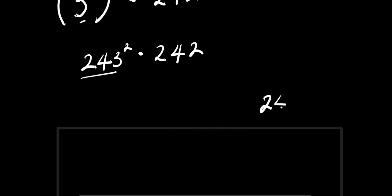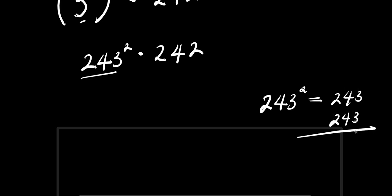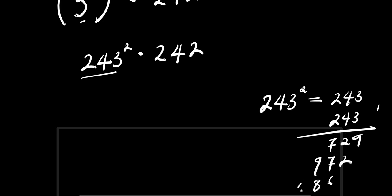So 243 to the power of 2 equals 243 times 243. Working through the multiplication: 3 times 3 is 9; 3 times 4 is 12, carry 1; 3 times 2 is 6 plus 1 is 7; 4 times 3 is 12, carry 1; 4 times 4 is 16 plus 3 is 19, carry 1; 4 times 2 is 8 plus 1 is 9; 2 times 3 is 6; 2 times 4 is 8; 2 times 2 is 4.